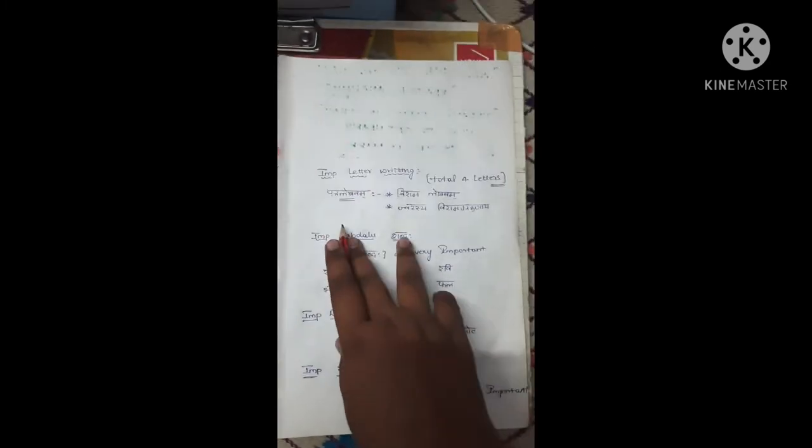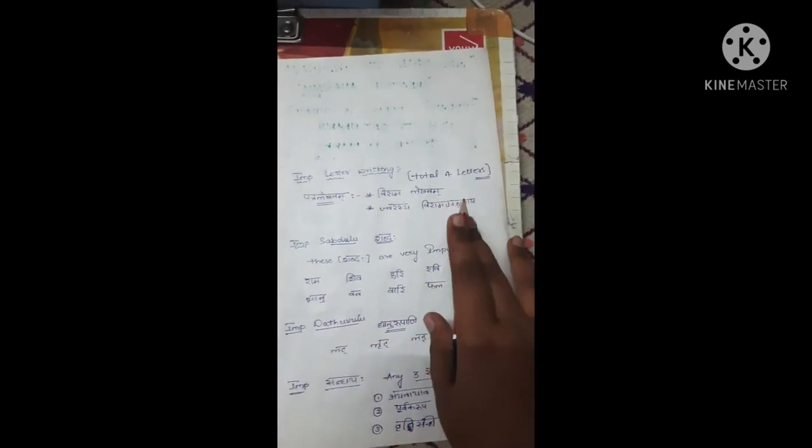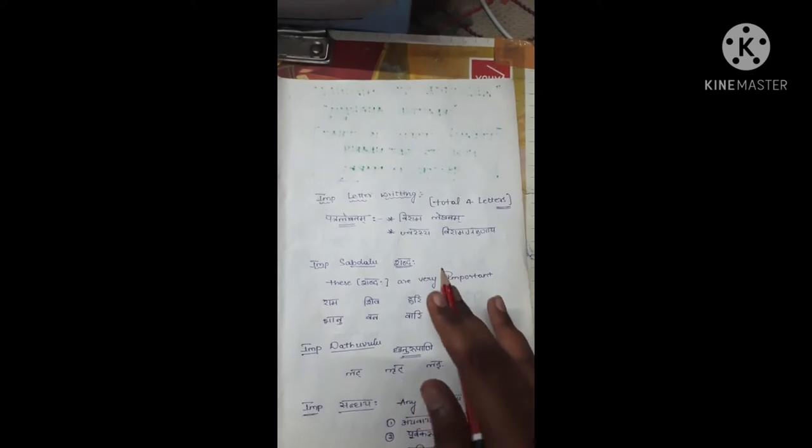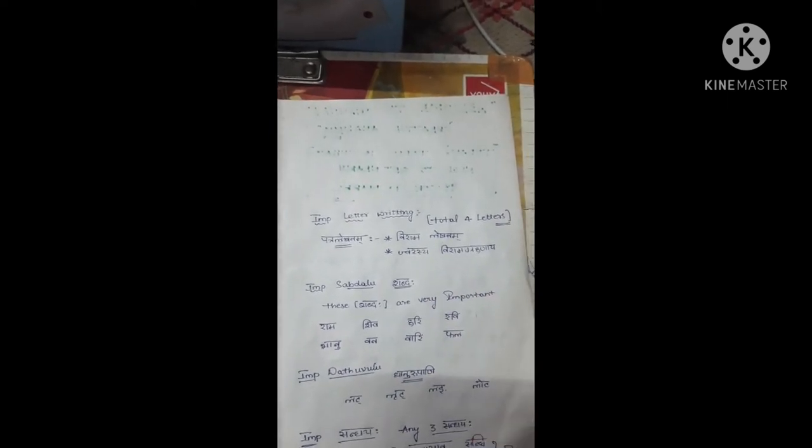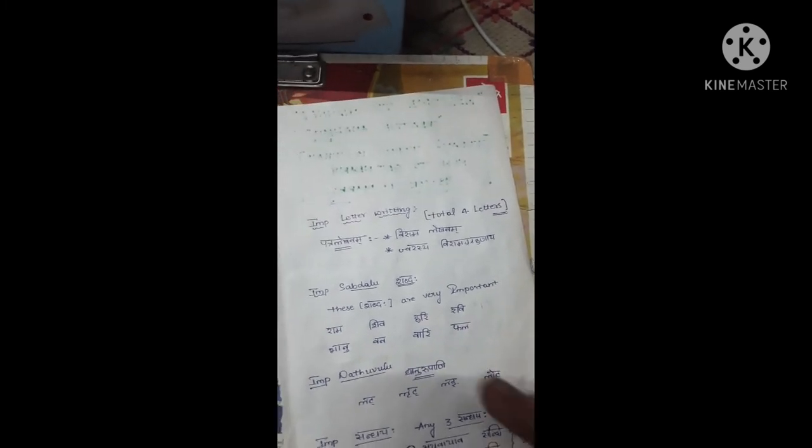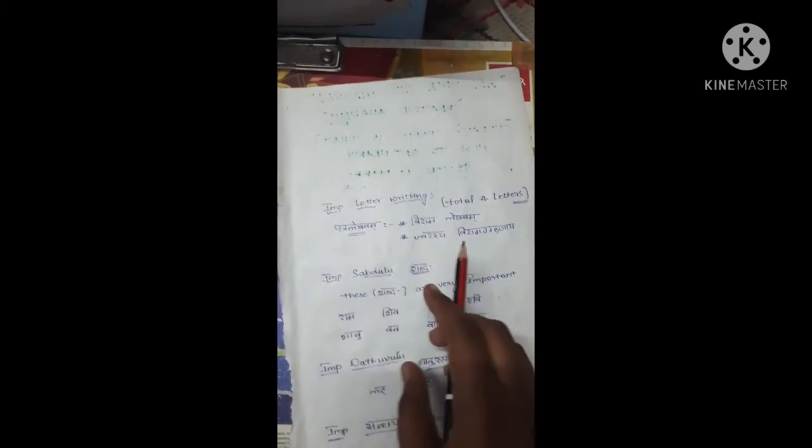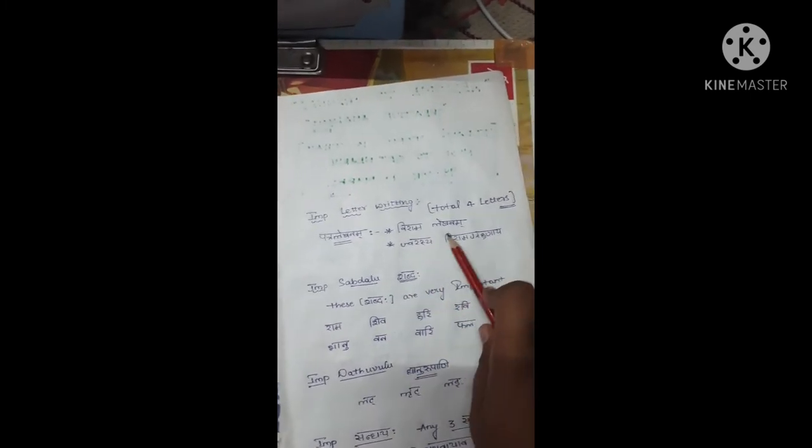Next, let's see letter writing. In the textbook there are four letters total. From these four letters, two letters are important. From those two, one letter will appear in the exam. Topics include Patra Leekanam, Virama Leekanam, and Jivarashi Virama Grahanaya.